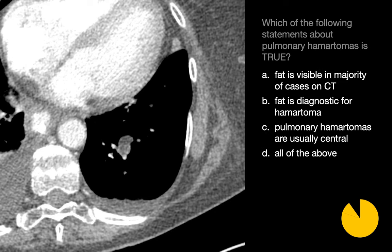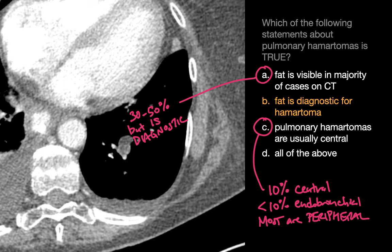Which of the following statements about pulmonary hamartomas is true? The only true statement is that fat is diagnostic for a pulmonary hamartoma when present. Fat is visible in 30 to 50%, but not a majority of pulmonary hamartomas on CT. Also, most pulmonary hamartomas are peripheral. About 10% are central, and less than 10% are endobronchial.